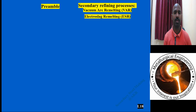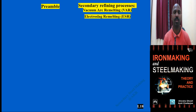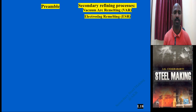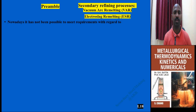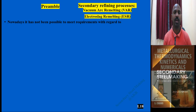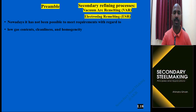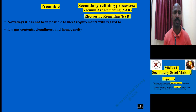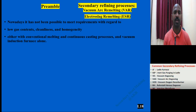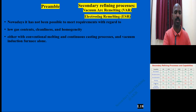Even on a small scale, these processes are necessary for defense and nuclear applications. For other applications, this route may not be necessary and is not cost-effective economically, requiring more capital investment. In the present situation, these are needed to meet requirements such as low gas content (hydrogen and nitrogen), cleanliness, inclusion-free or less inclusions, homogeneity, and no segregation. Conventional steelmaking, continuous casting, tundish technology, and vacuum induction furnace alone are not meeting these requirements.